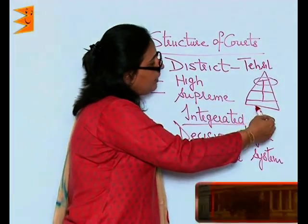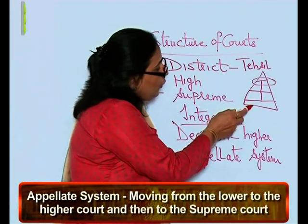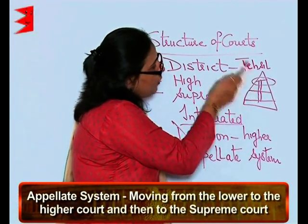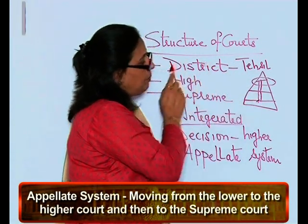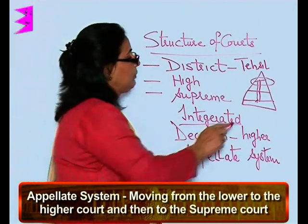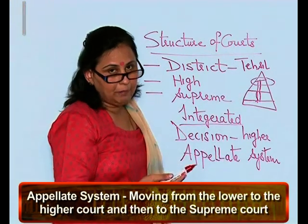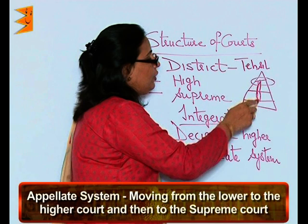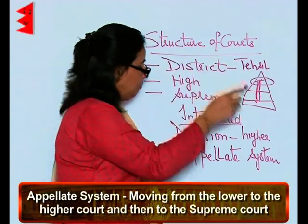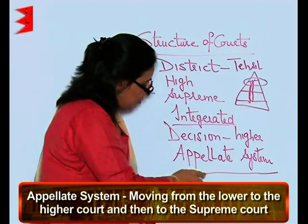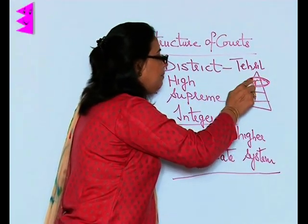Besides this, there is also the appellate system in India — that is, you can move from a lower court to a higher court. For example, if a person is unhappy with the decision of a subordinate court, they can move against it to the high court, and if still unhappy, can move to the Supreme Court. This is the appellate system of jurisdiction in India, and the final decision of the Supreme Court remains supreme and cannot be challenged.